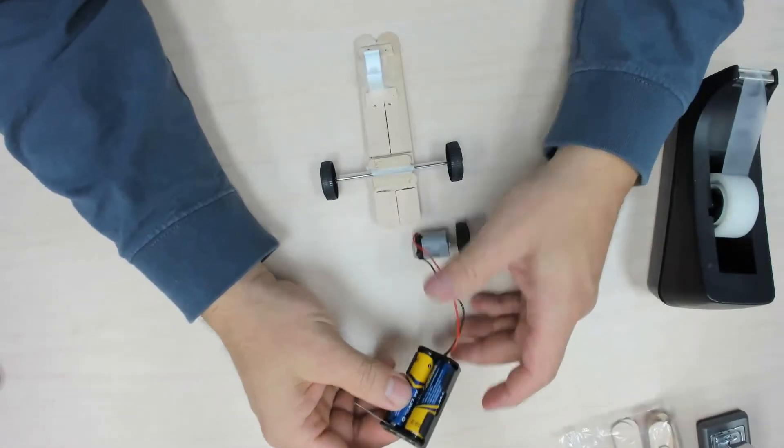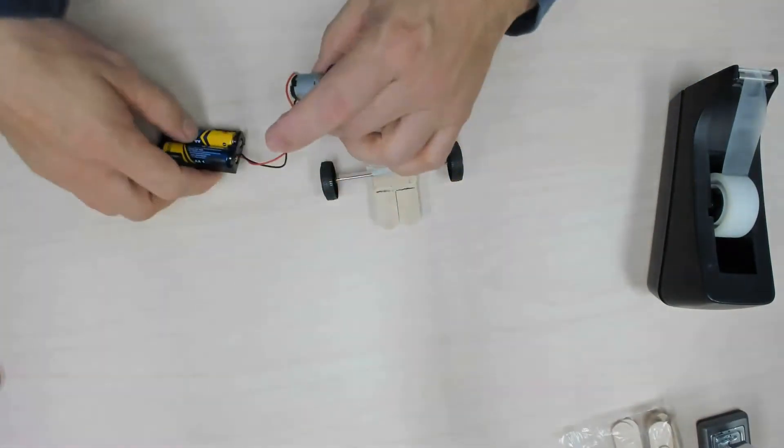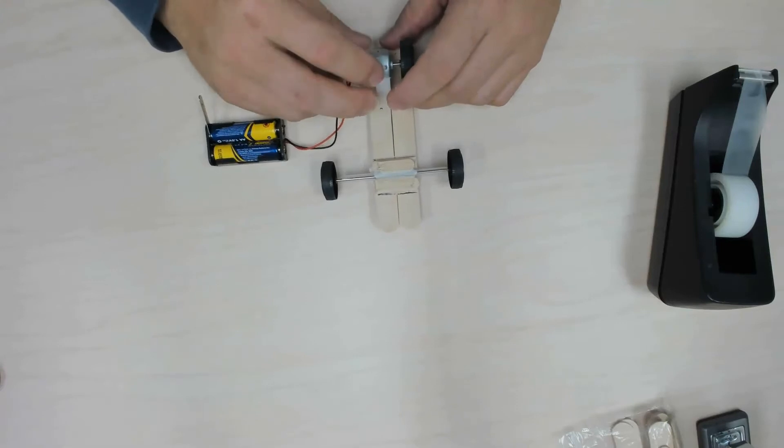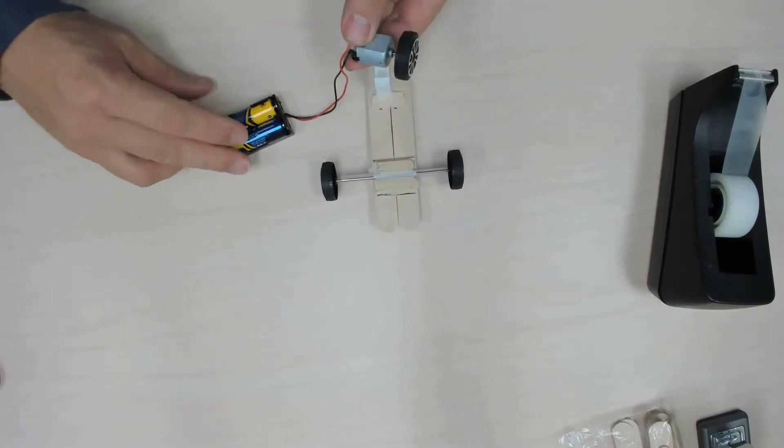And we have the switches open. Now, depending on how we install our motor into our holder, the cart will go either forward or backwards. Okay, so we can test and see which direction.